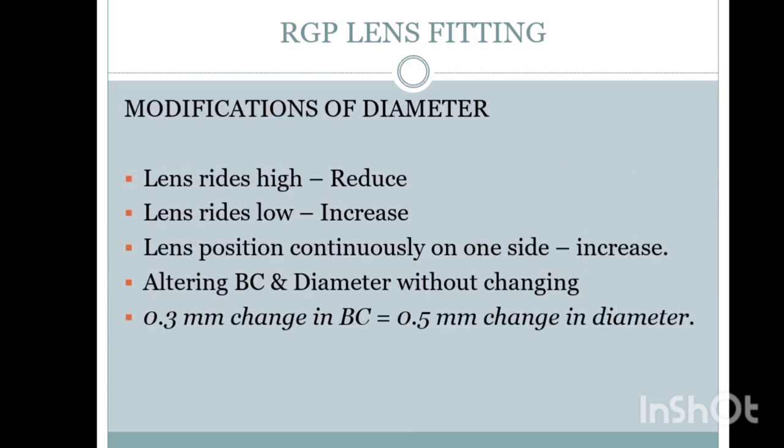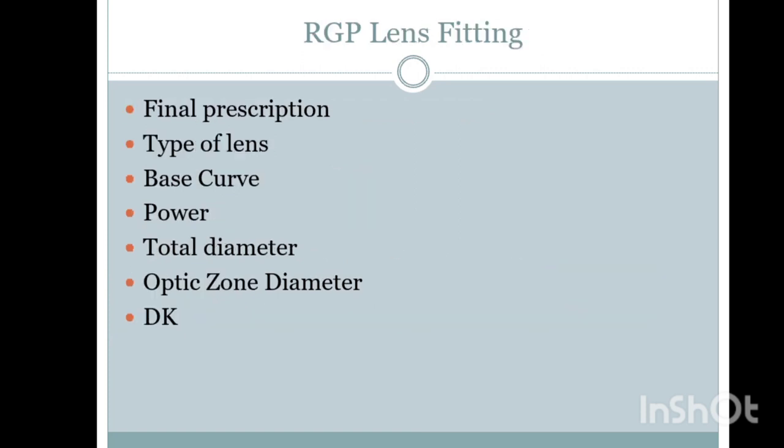What modifications are needed for diameter? If the lens rides high, reduce the diameter. If the lens rides low, increase the diameter. If the lens position is continuously on one side, increase the diameter. When altering base curve and diameter without changing the fit, follow the thumb rule: a 0.25 to 0.3 mm change in base curve requires a 0.5 mm change in diameter.